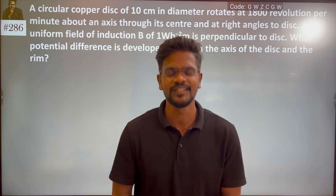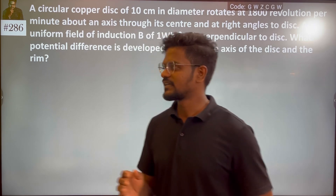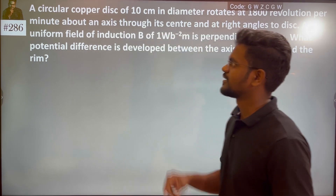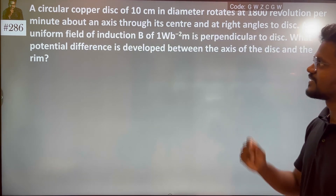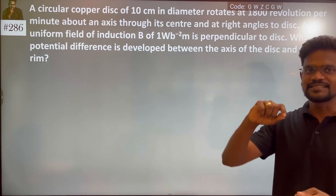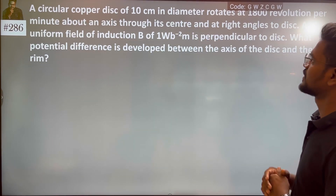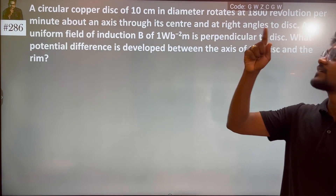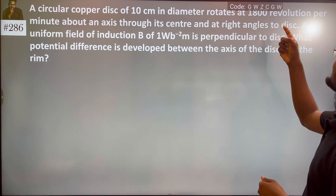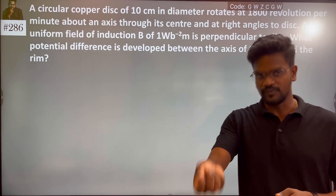Hi everyone, I am very interested in this question. A circular copper disk of 10 cm in diameter rotates at 1800 rpm per minute. We need to find the frequency.